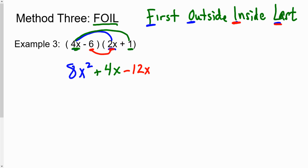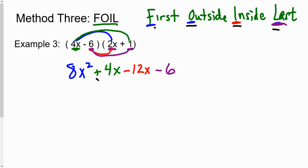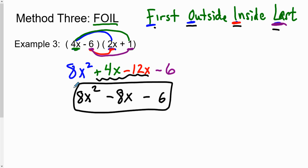The last term in the first binomial is negative 6 and in the second is 1, so negative 6 times 1 is negative 6. The arcs drawn for FOIL look a lot like the distributive property — because it is exactly the same, just a different way to remember it. The two middle terms are like terms: 4x minus 12x is negative 8x. Write the first and last terms as-is, and that's your answer — the FOIL method.